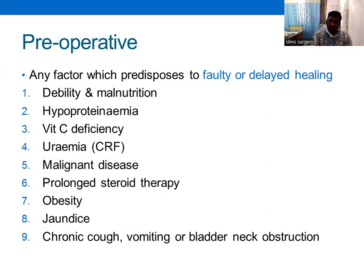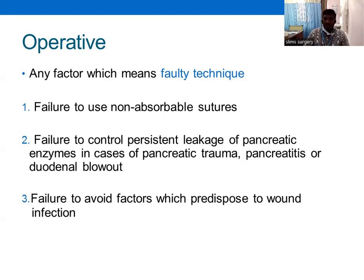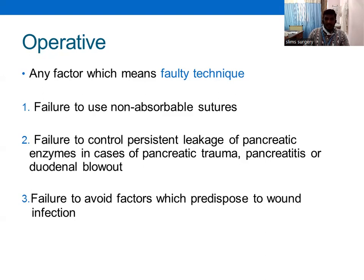Operative factors include faulty technique and failure to use a non-absorbable suture — the rectus sheath should be closed with prolene suture number one or 1-0. Failure to control persistent leakage of pancreatic enzymes in cases of pancreatic trauma, pancreatitis, or duodenal blowout is another factor, as pancreatic juice causes irritation leading to post-operative burst abdomen. Failure to maintain sterile technique and avoid wound infection intraoperatively is also important.